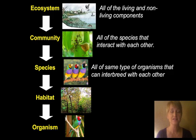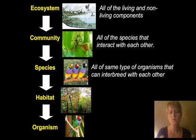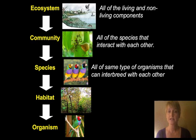A species is all of the same type of organisms that can interbreed with each other. The definition of species is important because we need to be talking about just one particular type of animal — those that can breed together and reproduce. For example, when a tiger and a lion breed and produce a liger, the liger is not a species because it can't interbreed with other ligers.